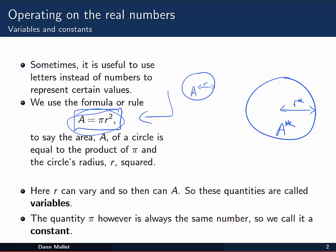We say that R can vary depending on the circle we're talking about, and as a result so can the value of A. So these quantities are often referred to as variables, because they can vary.